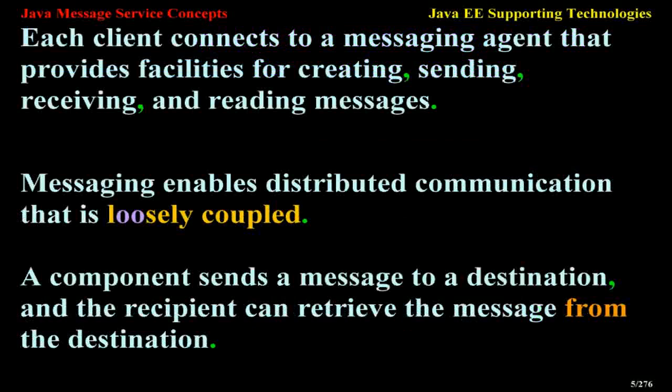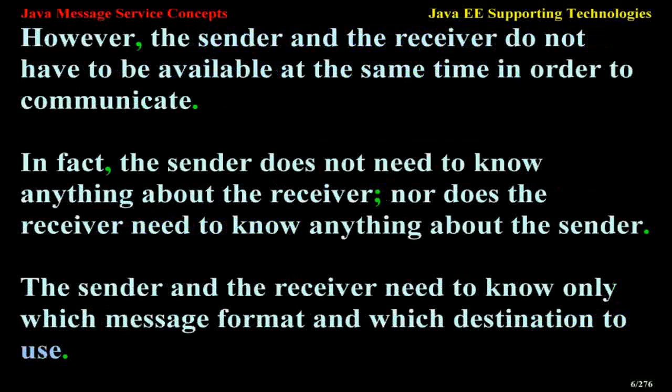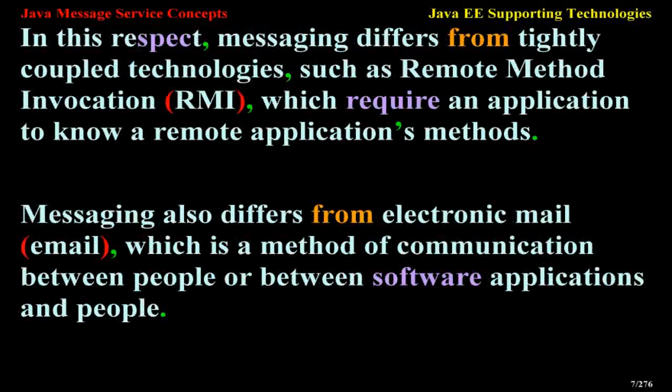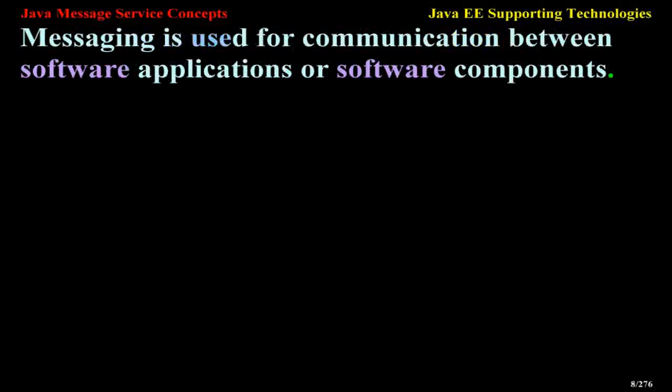The sender and the receiver do not have to be available at the same time in order to communicate. In fact, the sender does not need to know anything about the receiver, nor does the receiver need to know anything about the sender. They need to know only which message format and which destination to use. In this respect, messaging differs from tightly coupled technologies such as remote method invocation (RMI), which require an application to know a remote application's methods. Messaging also differs from email, which is communication between people. Messaging is used for communication between software applications or software components.